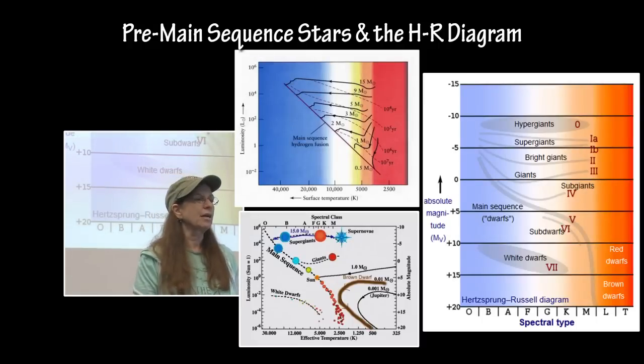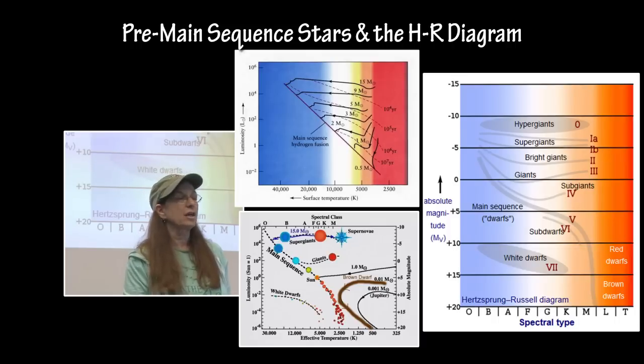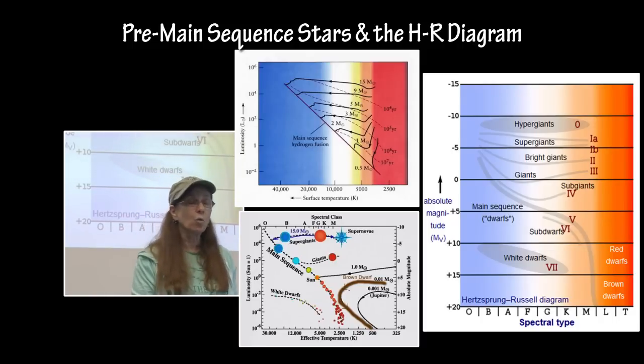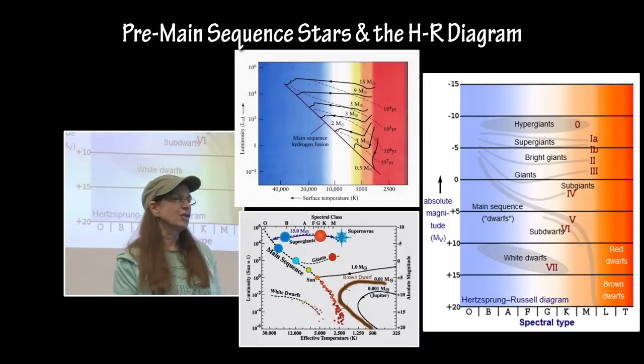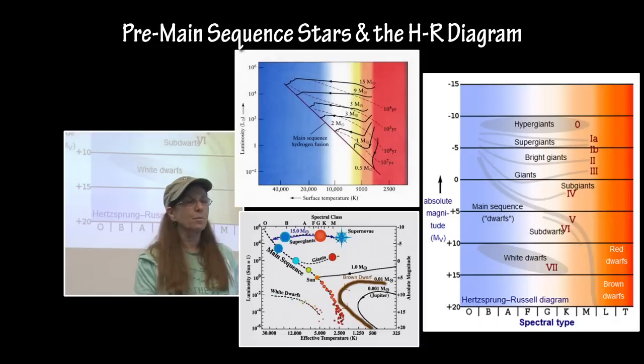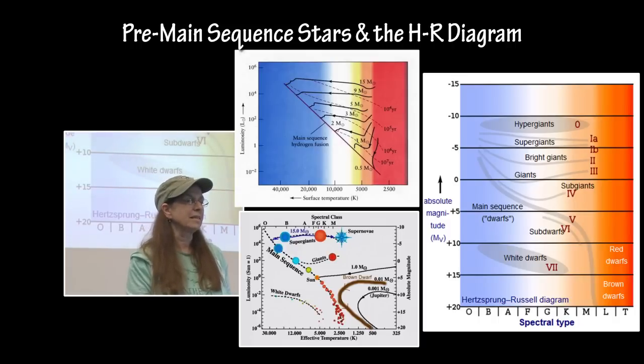These HR diagrams, the one on the lower left, shows protostars of certain masses and their path that they take along the HR diagram until they drop onto the main sequence. The one on the lower left shows someone has drawn in the path of a brown dwarf, and you can see it approaches the main sequence but never quite makes it, and then it shows a Jupiter mass planet and a 0.001 Jupiter mass planet, showing that that never does come close to the main sequence.